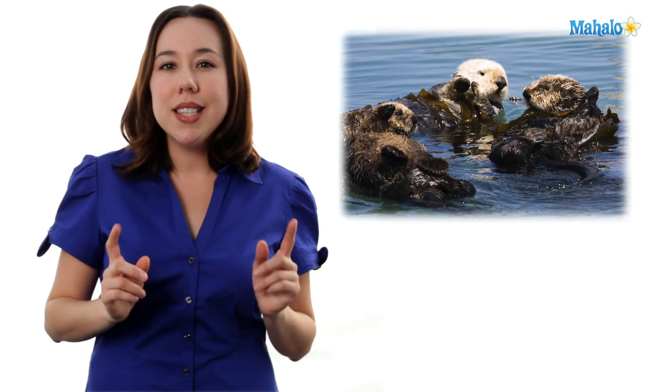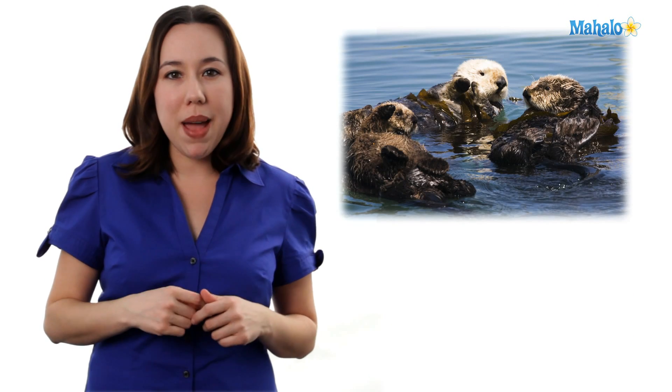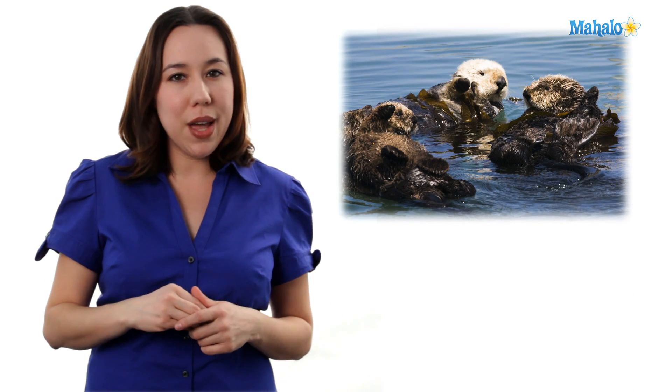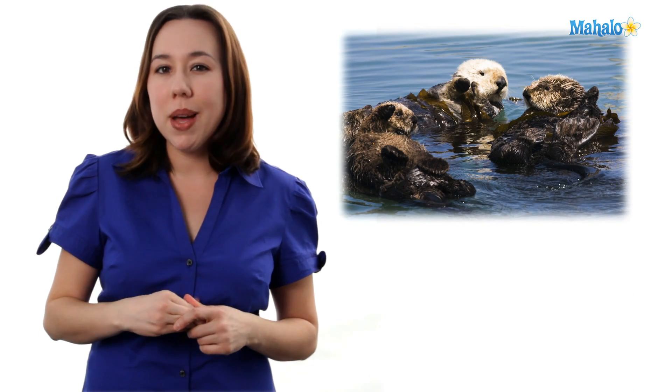So what's the big deal? Well, kelp actually provides a place for protection as well as spawning for fish. So as the sea otters disappeared, so did the fish. Luckily, sea otters were brought back and the ecosystems off the coast of California are doing much better.